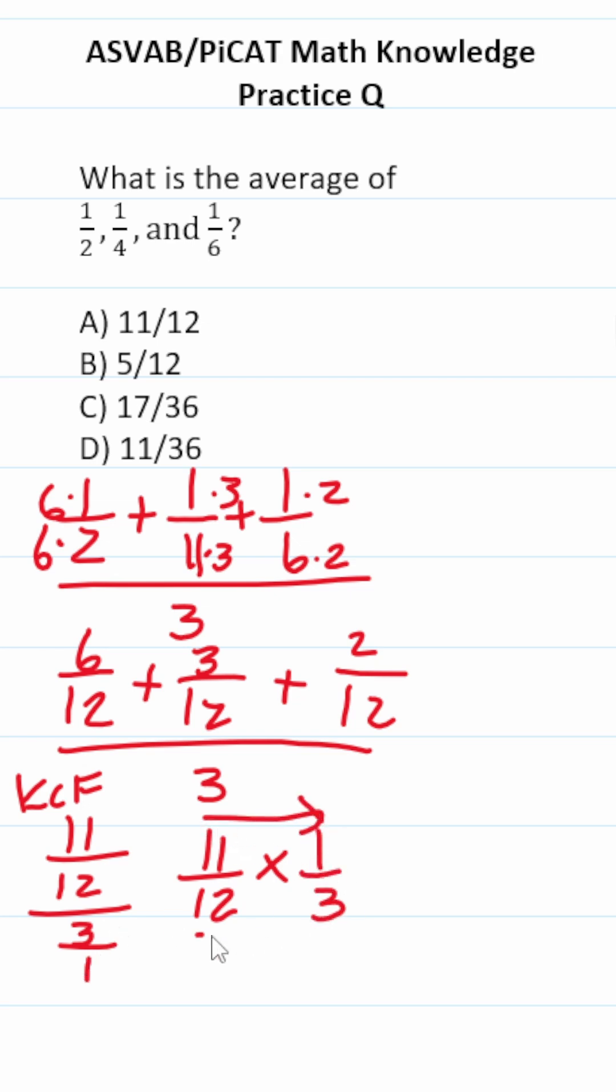Multiplying fractions is straightforward. You just multiply straight across. Eleven times one is eleven. Twelve times three is thirty-six. So the average is D, eleven over thirty-six.